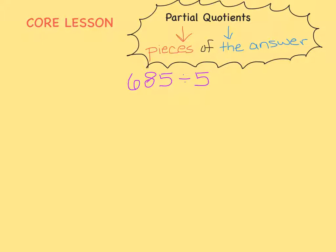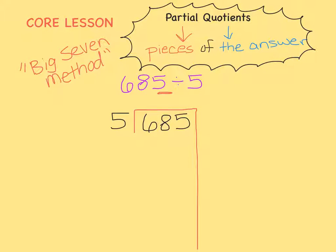Let's use Partial Quotients to divide 685 by 5. Right off the bat, I can use my divisibility rules to notice that 685 ends in a 5, so it will divide equally into 5 groups. Let's find out how many will be in each of those 5 groups. Some people like to nickname Partial Quotients the Big 7 method — it kind of looks like a big 7 when we set it up. We write our dividend inside the 7, and our divisor just outside of the 7.